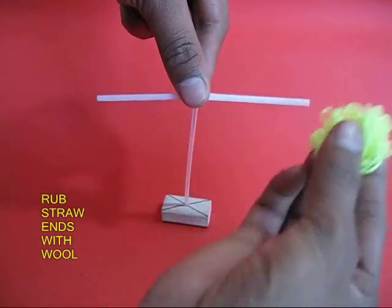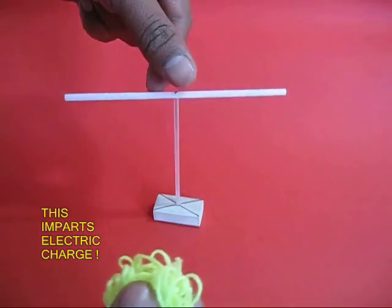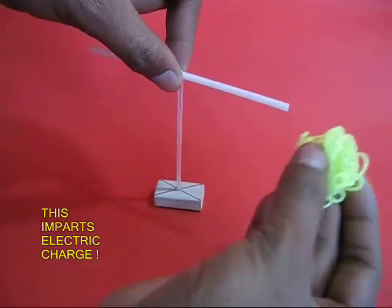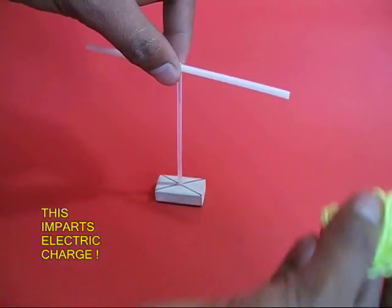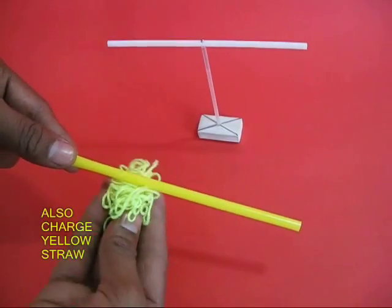Take a piece of wool and rub both ends of the straw with wool. This will impart a charge on the straw. The straw will become electrically charged.